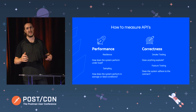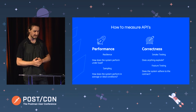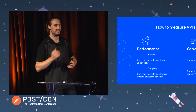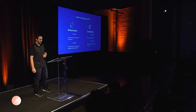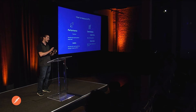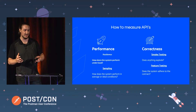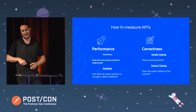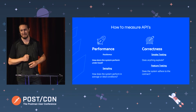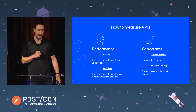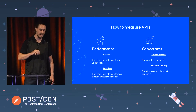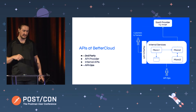Feature testing is the one everybody thinks of when they think of Postman testing scripts — does the call do what it's supposed to do? When I request a user, do I get a user payload back? Or when I make a call to suspend a user or run a report, do I get the expected results back? All four of these are important and we have testing strategies for each of them. When I think of Postman and load testing, if you know a way of hacking it to work, I'd love to hear it — but we leverage Postman for sampling, smoke testing, and feature testing.